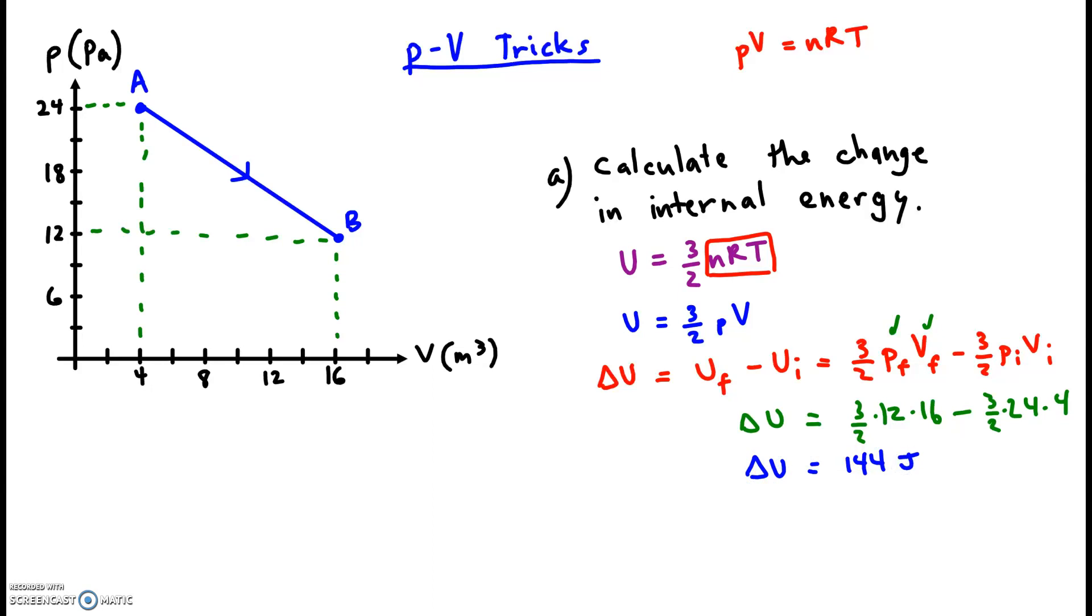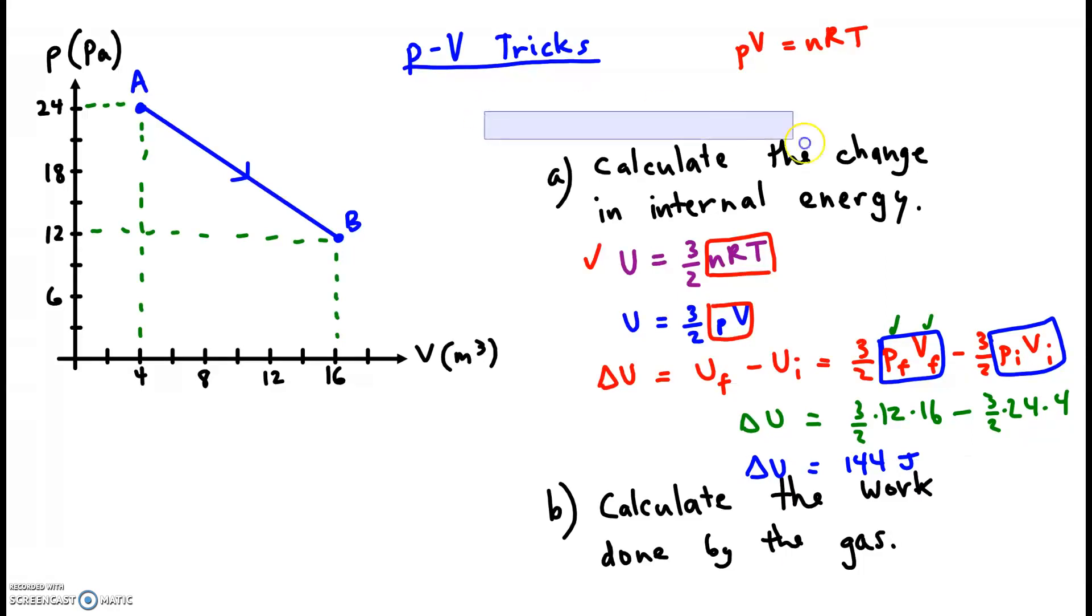So again, we started with the classic equation for internal energy. We substituted in for nRT. We found the delta by plugging in the final pressure and volume values and subtracting away the initial pressure and volume values. The next question.